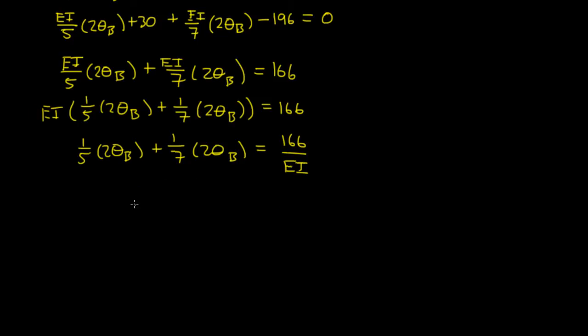And if you just do the algebra, you figure out what theta B is, you'll find out that theta B is equal to 2905 over 12EI. So theta B is equal to 2905 over 12EI.